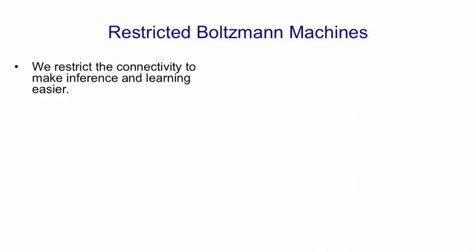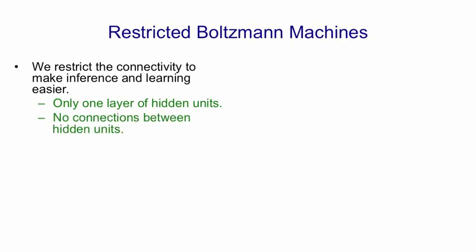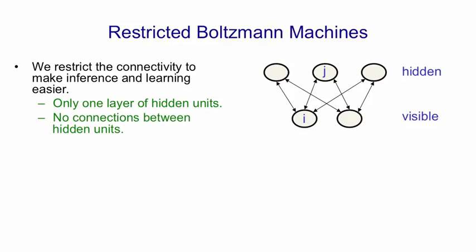In a restricted Boltzmann machine, we restrict the connectivity to make inference and learning easier. It only has one layer of hidden units with no connections between hidden units and no connections between visible units. The architecture looks like that—it's what computer scientists call a bipartite graph. There's two pieces and within each piece there's no connections.